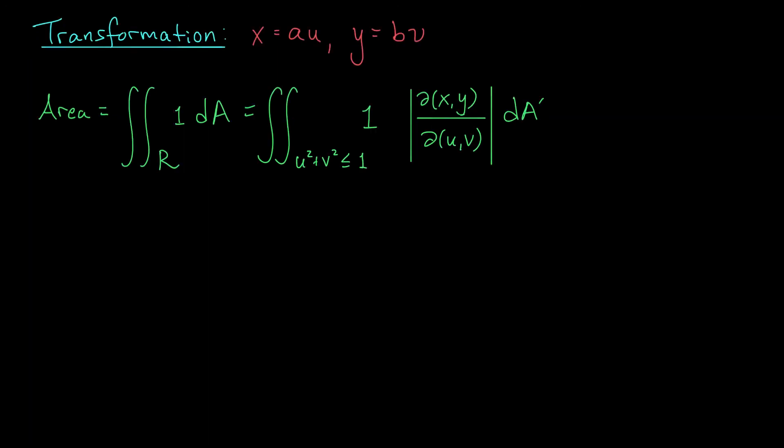Okay, so we've decided to make a change of variables. x equals au, y equals bv. Doing this, we'll change our area integral, the double integral over our elliptical region, into a nicer double integral, the double integral over the unit circle in the uv plane, but of course, we need to figure out our area factor. That's given by the absolute value of our Jacobian matrix.